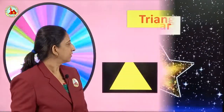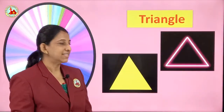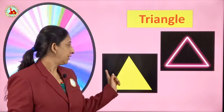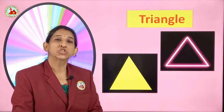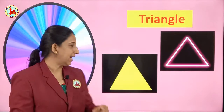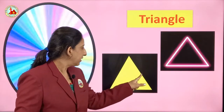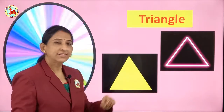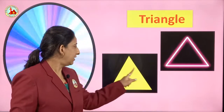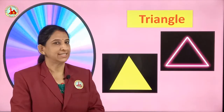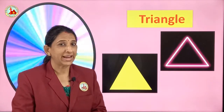This is which shape? 3 sides — triangle. Tri means 3 sides. One side, another side, and this is the third side — one, two, three sides. This is a triangle. Have you ever eaten pizza? Yes, this is a triangle shape. Three sides and that is a triangle.